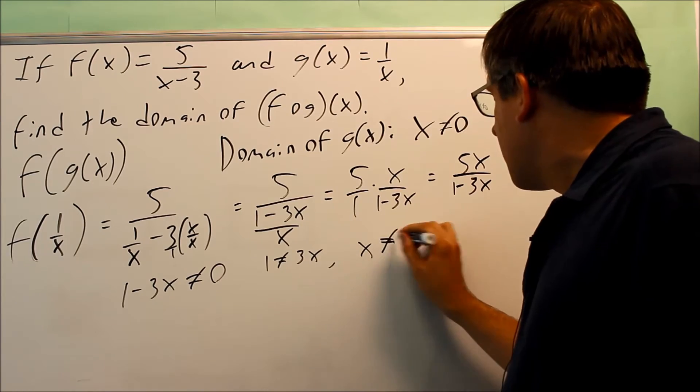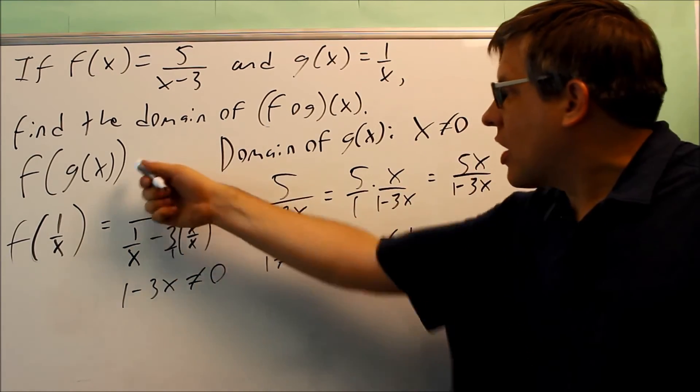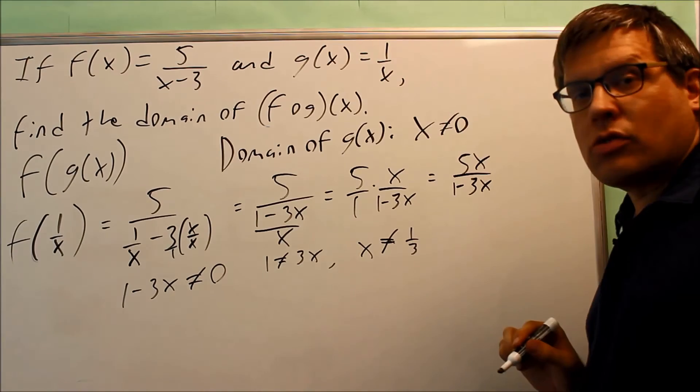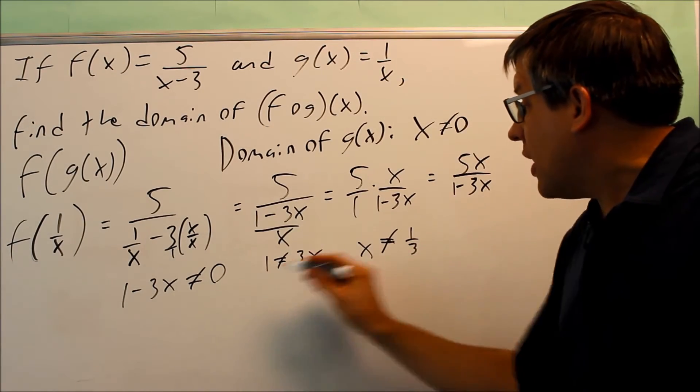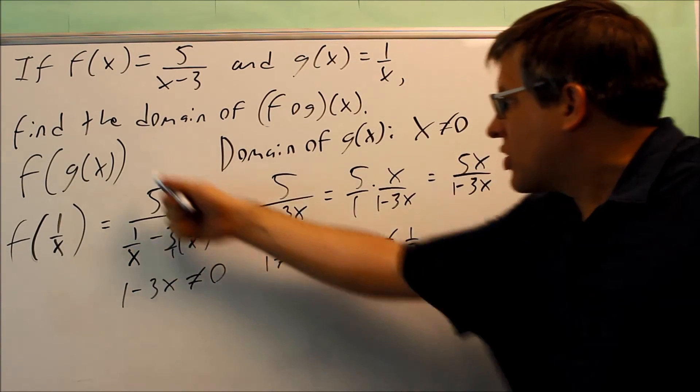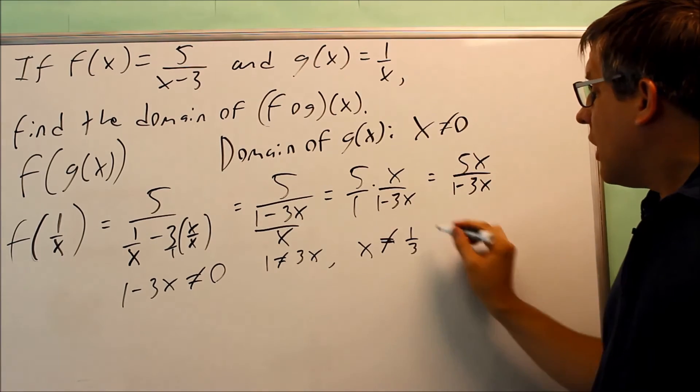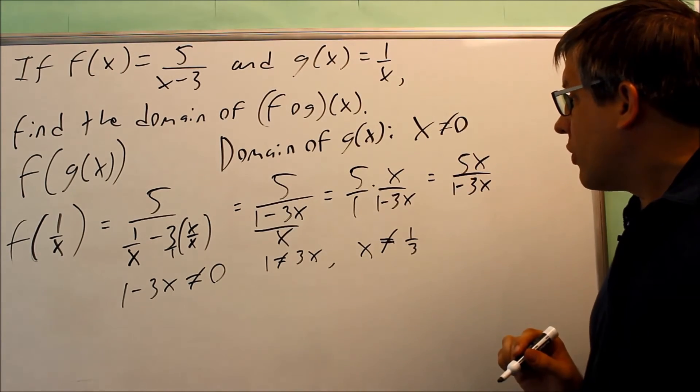So now I have two different things I'm not allowed to use. I did the domain of g of x first, and I said that x is not equal to 0. Then I did the domain of this once I finally worked all this out, and I got that x is not equal to 1 third.